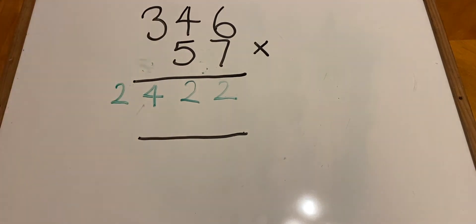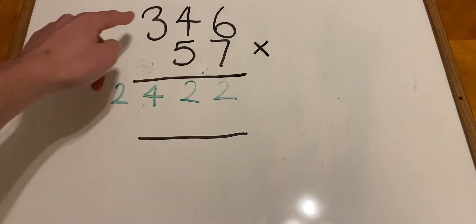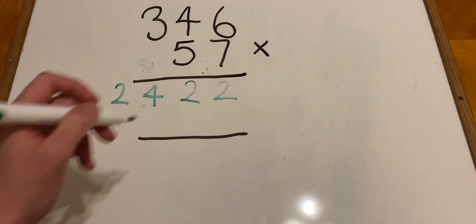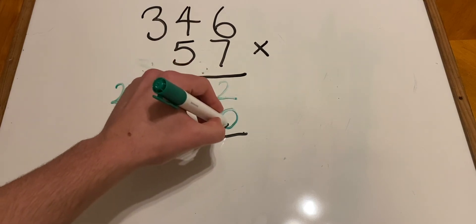So we've done 346 times 7 so far. Now it's time to do 346 times the 50. Remember, because we're multiplying by 50 and not 5, we need to put a placeholder 0 here.